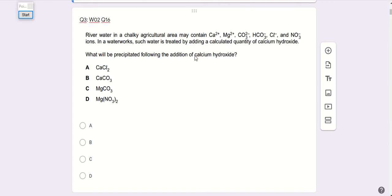Now, the water is treated by adding calcium hydroxide. When they treat water, normally they want to remove ions. So when they add calcium hydroxide, something is precipitated out.